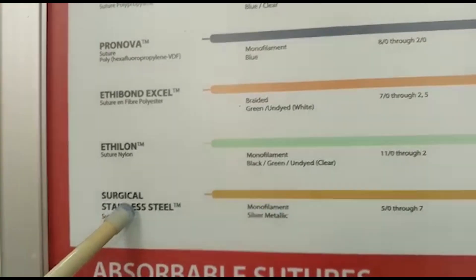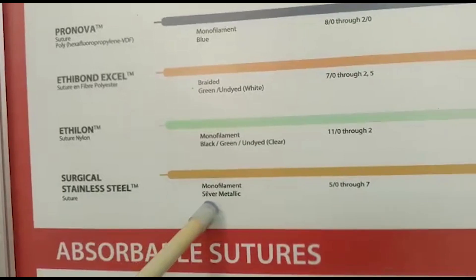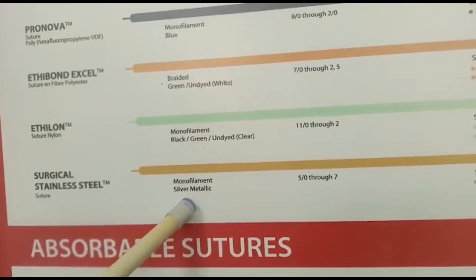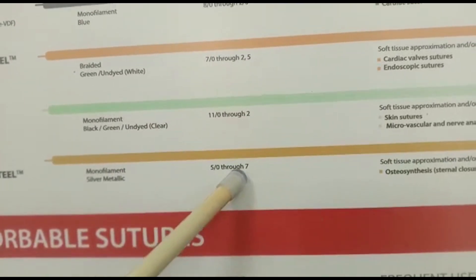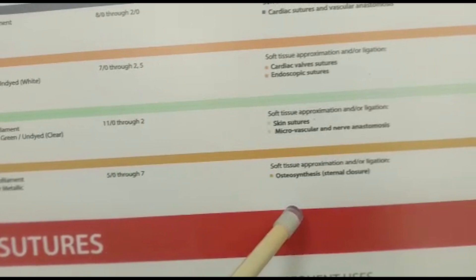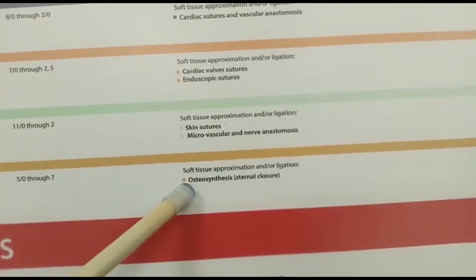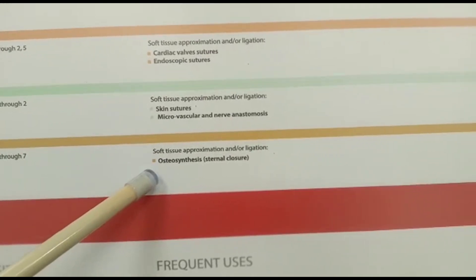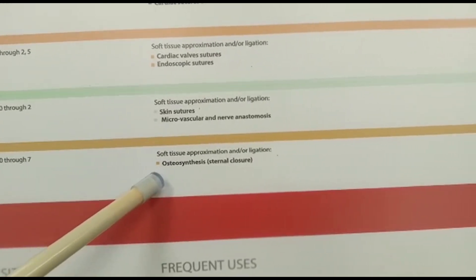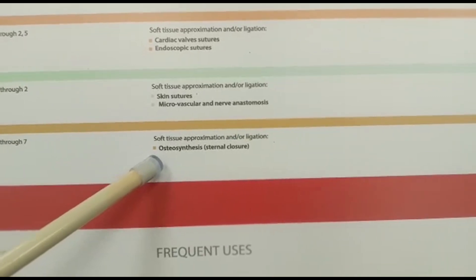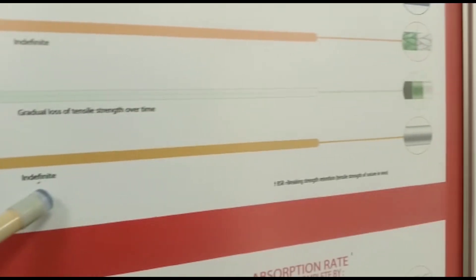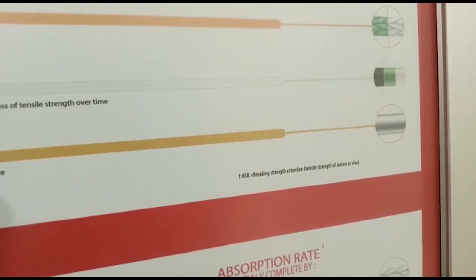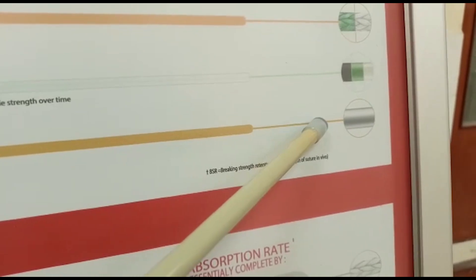We also have surgical stainless steel sutures. These are also monofilament and come in a silver metallic color. Sizes range from 5-4 through 7-0. They are used in soft tissue approximation in orthopedic surgeries, such as cases of osteoarthritis, and sometimes for sternal closure in cardiac surgery. Their strength is indefinite.